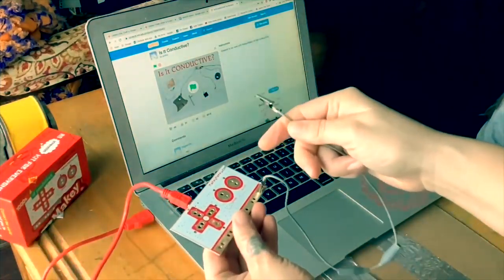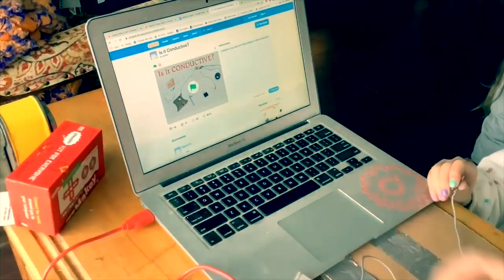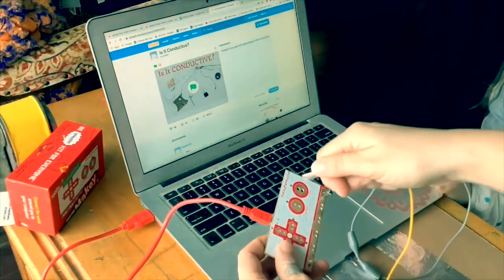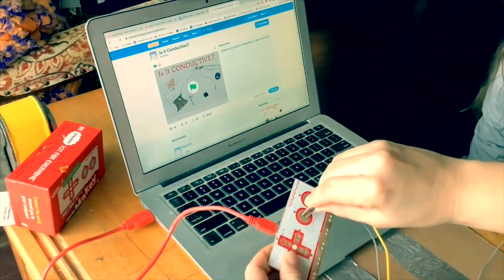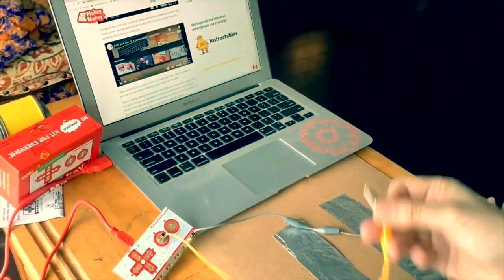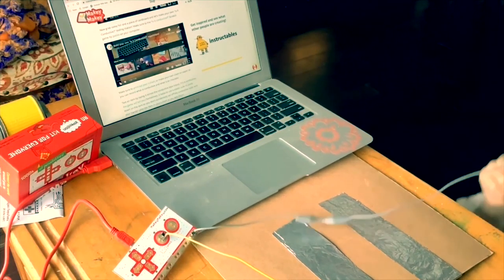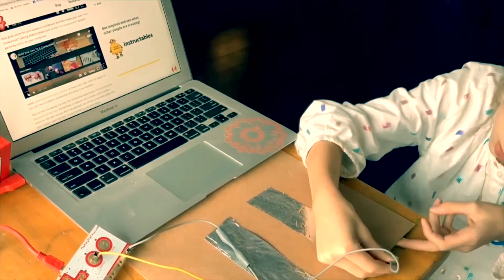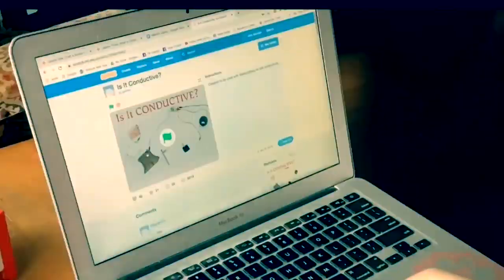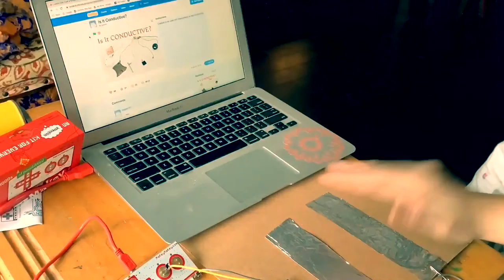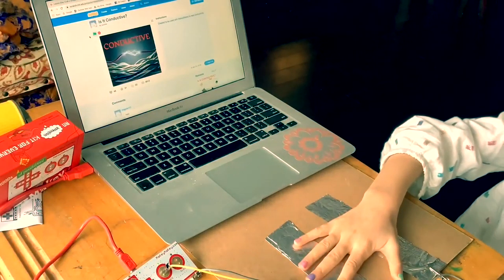Then we'll attach one of our alligator clips to the earth and another alligator clip to the space. Now the other end of our alligator clips get clipped onto our strips of tin foil, one on either side. Back on your screen, you're going to want to click that green flag to begin. Go ahead and touch. Conductive!